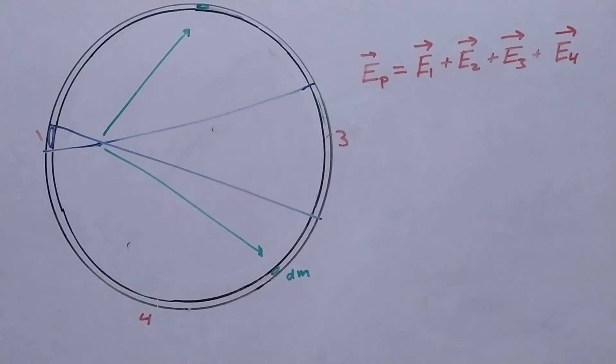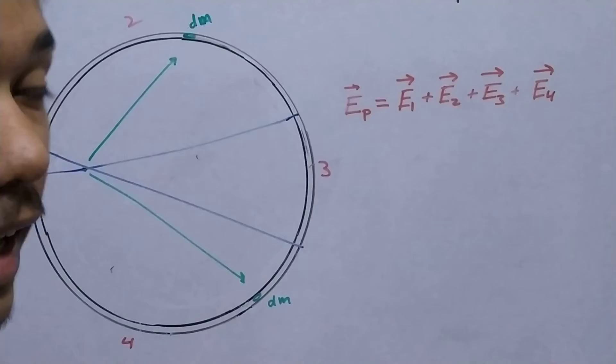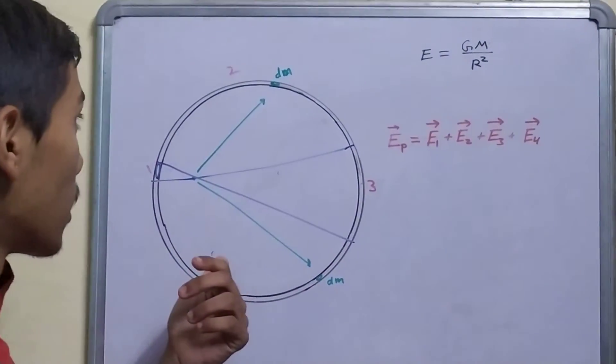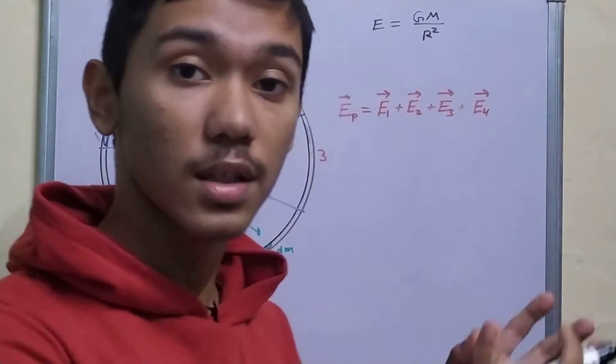Now, if you observe carefully, the second portion and the fourth portion are exactly the same, their mass will be the same, and their mass distribution will also be the same, since we have assumed that the sphere is uniform.